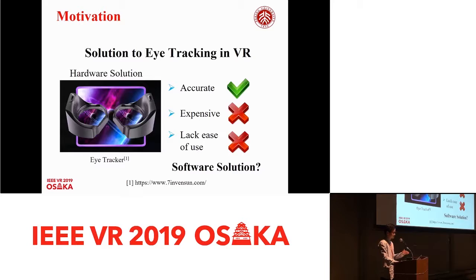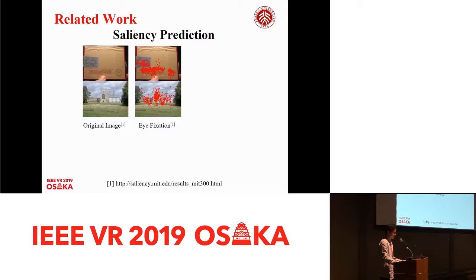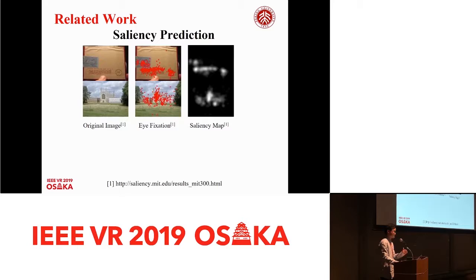Now let's have a brief review of prior work on gaze prediction. An important area of work is saliency prediction, which aims at predicting the saliency map of an image. A saliency map is a density map of eye fixations. Unlike saliency prediction, our goal is to predict a user's real-time gaze position.